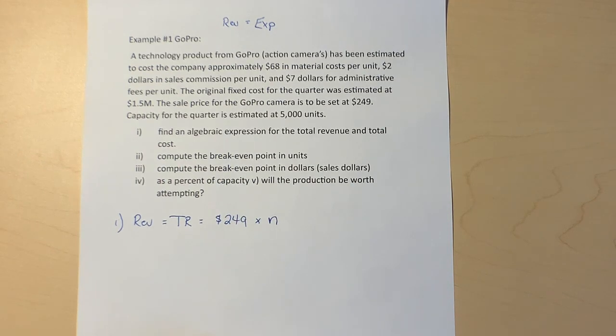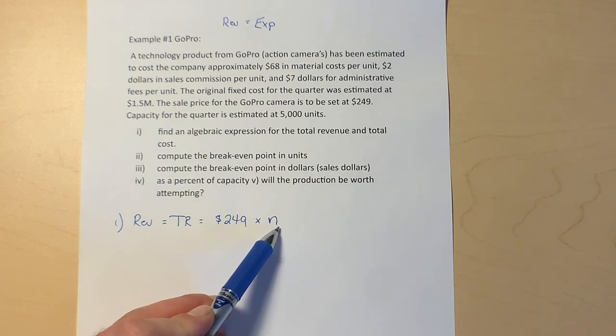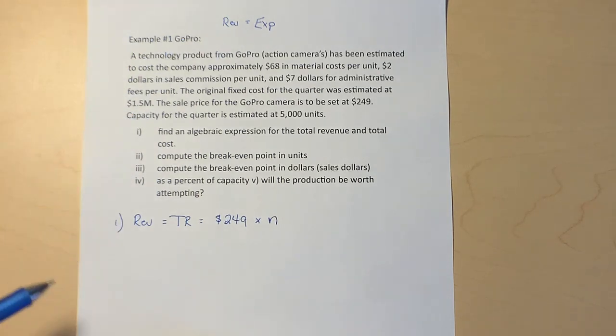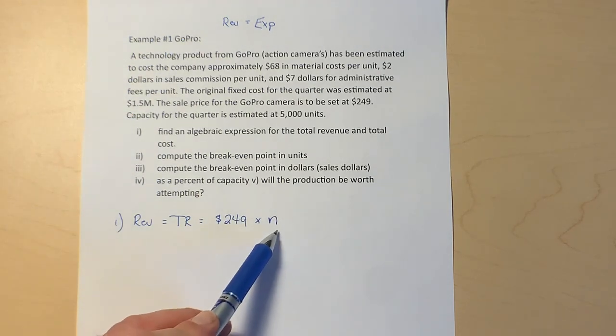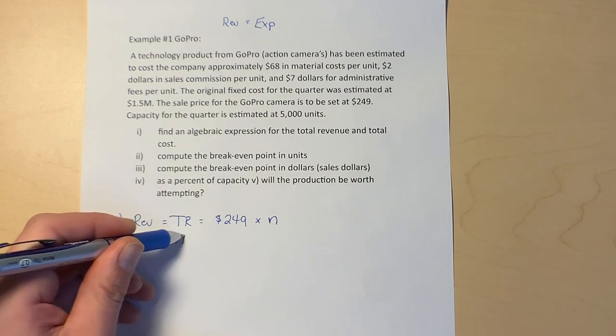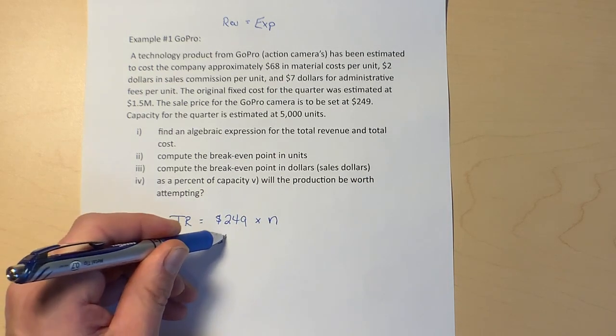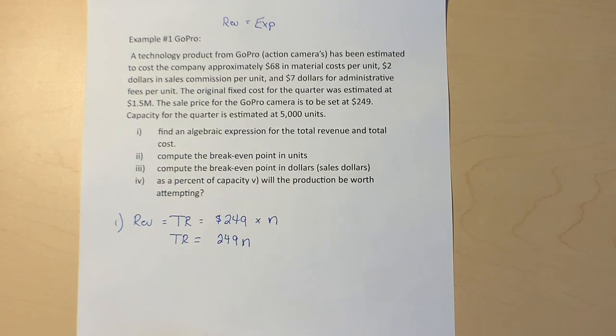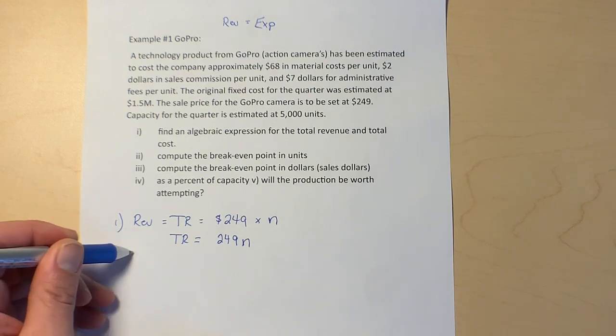Times the number of units that you sell, so we can call that n for number of units, or you could call it x. Whatever letter or variable you use here, we're going to use that same variable in the expenses formula. We have an algebraic expression for revenue; I can simplify that a little bit: TR equals 249n.